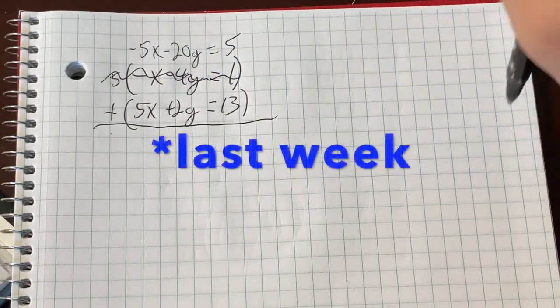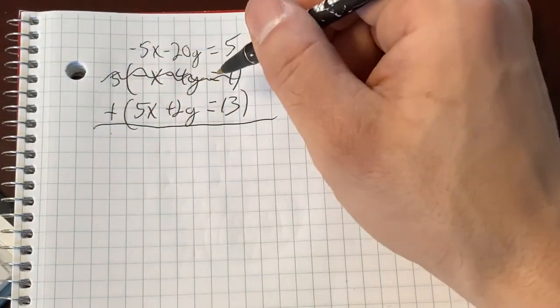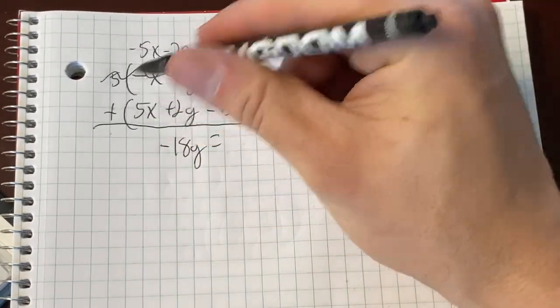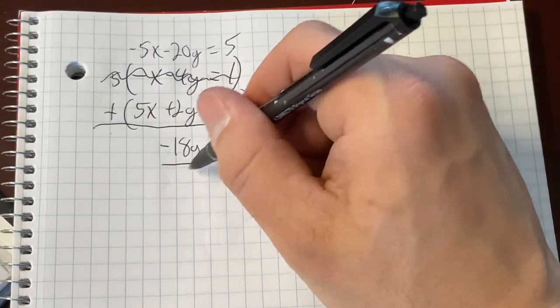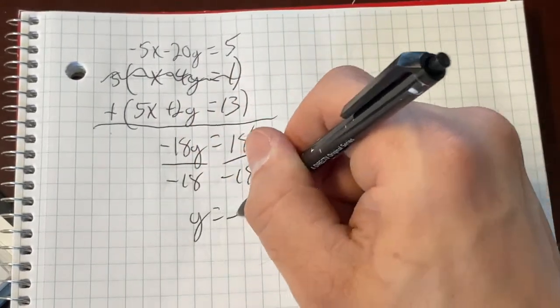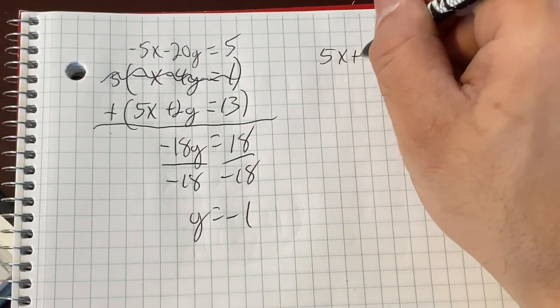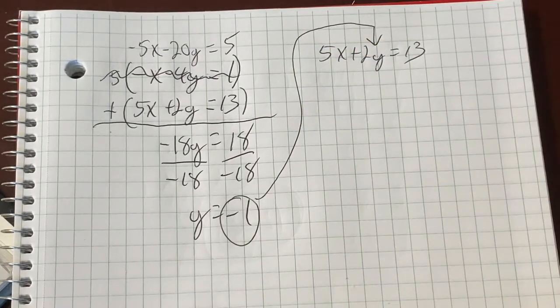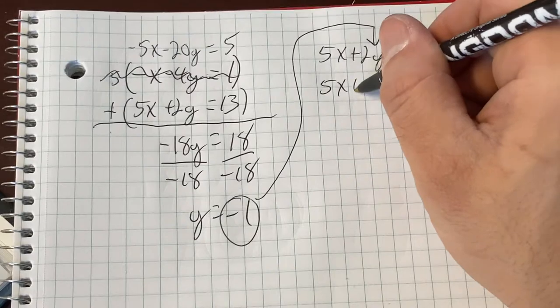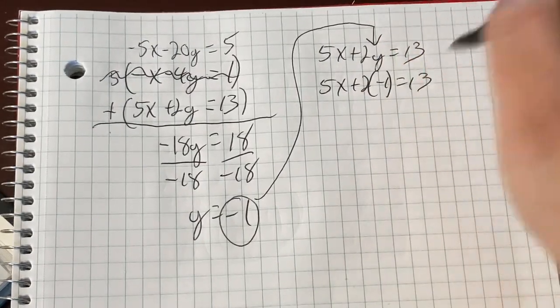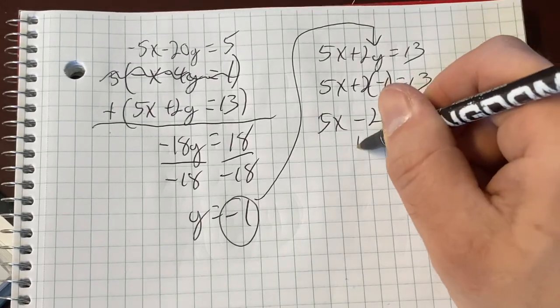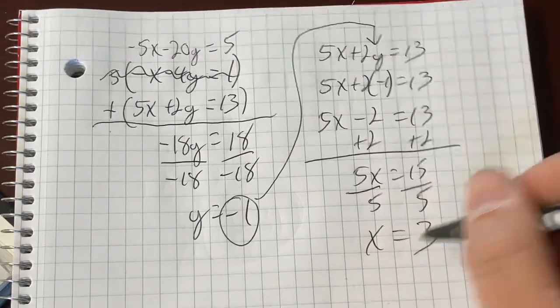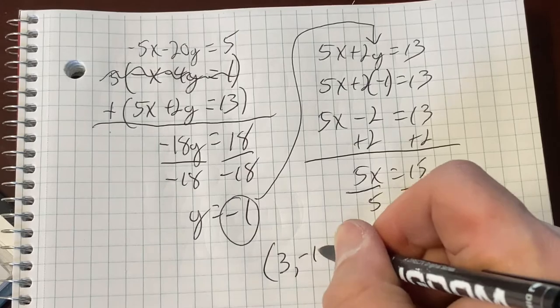Okay. So there you go. Add the x's. They eliminate. Negative 20 plus 2 is going to be a negative 18y. 5 plus 13 is 18. Divide by the negative 18. And y equals negative 1. So now let's choose the 5x plus 2y equals 13 equation. It doesn't matter. We're going to plug negative 1 in for y. Because it's the y this time we solved for. 5x plus 2 times negative 1 equals 13. 5x minus 2 equals 13. Add the 2 over. 5x equals 15. Divide by 5. x equals 3. Final answer. 3 comma negative 1.